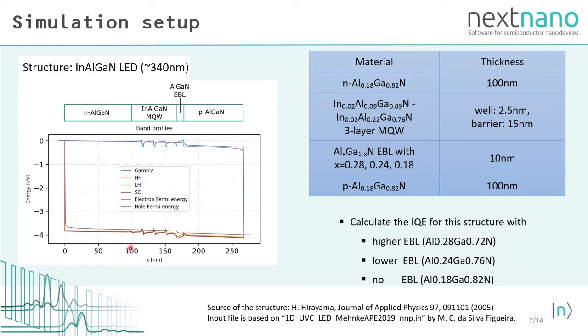Thus, we will simulate the simple LED structure that consists of N-type region, multi-quantum well region, electron blocking layer, and P-type region. We vary the aluminum content in the blocking layer so that we can compare the results with higher blocking layer, lower blocking layer, and no blocking layer.